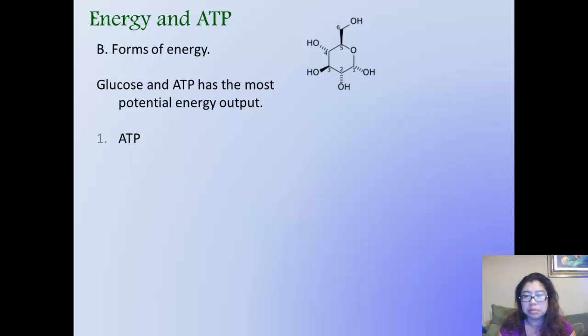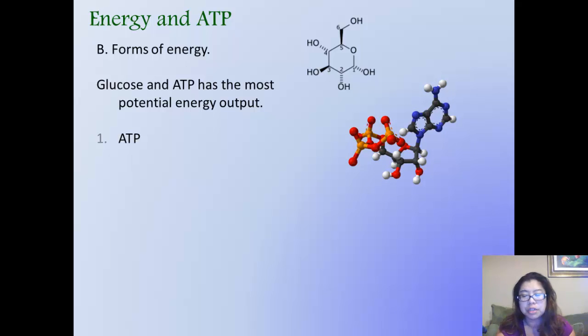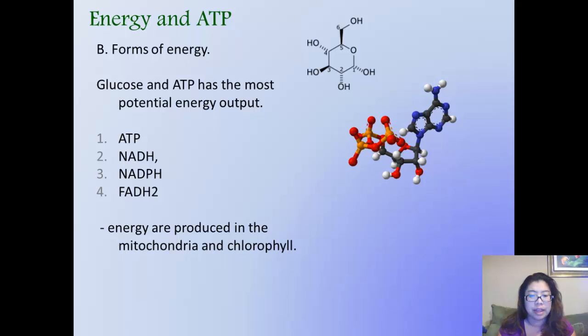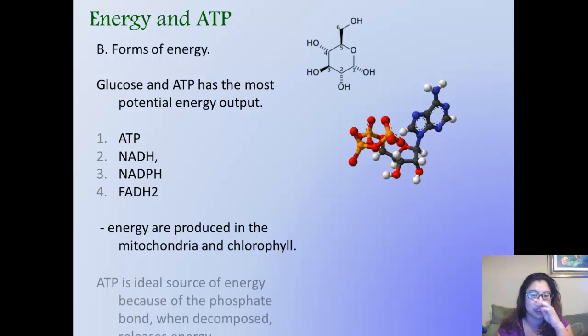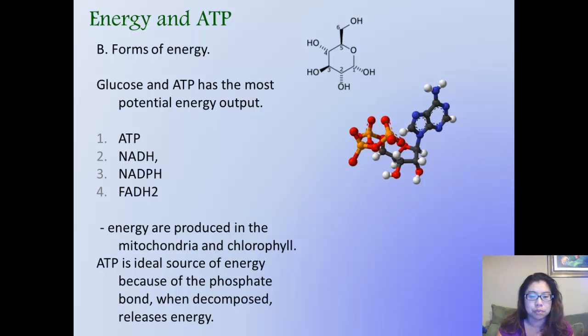Here is the chemical form of ATP in its 3D model form. You can tell that the blue rings are the nitrogen and the triphosphate are the orange and red bonds here. Carbon is always portrayed as the gray bonds in a molecular model. The other forms of energy that trail behind ATP is NADH, NADPH, FADH2. They are in descending order of how much energy they can contribute. Energy are produced in the mitochondria and chlorophyll. ATP is an ideal source of energy because the phosphate bond in between each of the bonds, when they decompose, taken apart, they release a lot of energy.